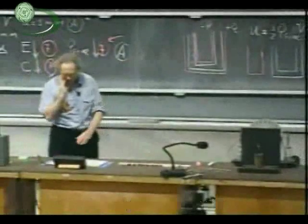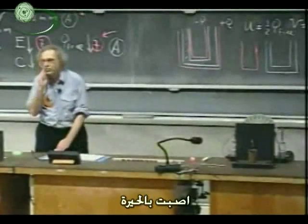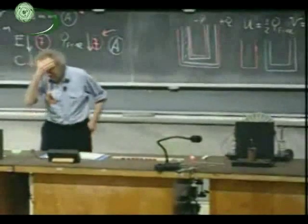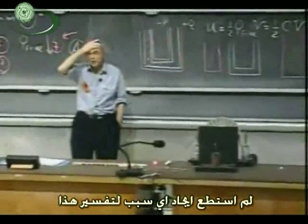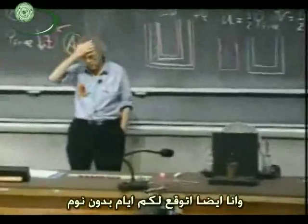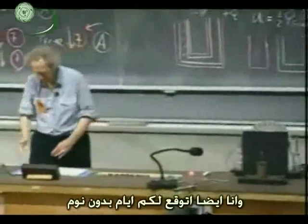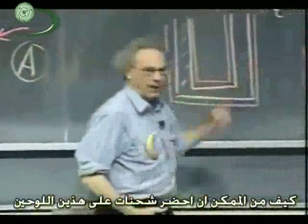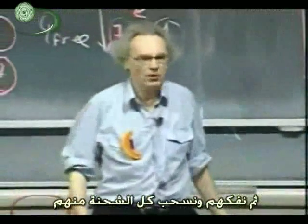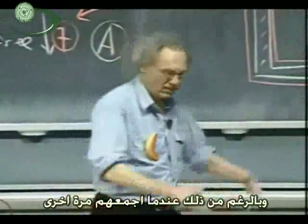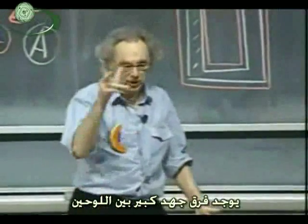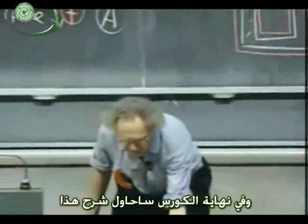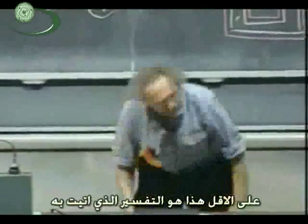When I saw this first — and I'm not joking — I was totally baffled. I was thinking about it and I couldn't sleep all night; I couldn't think of any reasonable explanation. My challenge for you is to also have a few sleepless nights and try to understand why this is happening. How is it possible that I bring charge on these two plates, disassemble them, totally take all the charge off, and nevertheless when I reassemble them there's a huge potential difference between the two plates — otherwise you wouldn't have seen the spark. Give that some thought, and later in the course I will make an attempt to explain this.